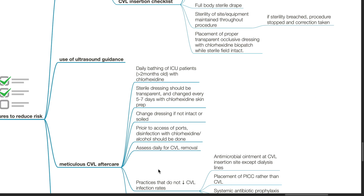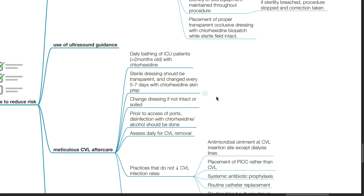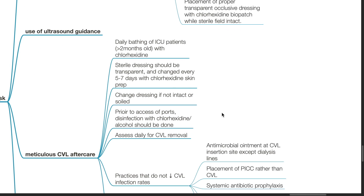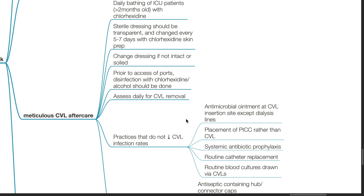Measures for CVL aftercare include daily bathing of ICU patients over 2 months old with chlorhexidine. Sterile dressing should be transparent and changed every 5–7 days with chlorhexidine skin prep. Change the dressing if not intact or soiled. Prior to access of ports, disinfect with chlorhexidine or alcohol. Assess daily for the need for CVL removal.